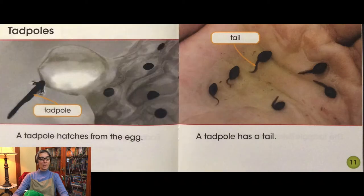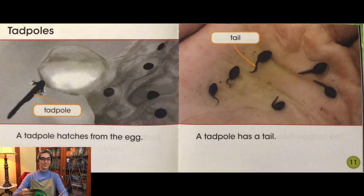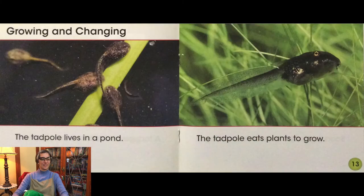A tadpole hatches from the egg. A tadpole has a tail. The tadpole lives in a pond and eats plants to grow.